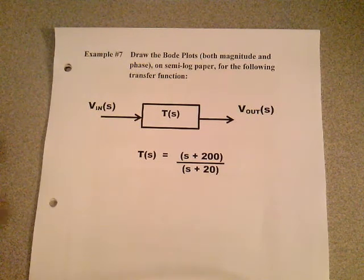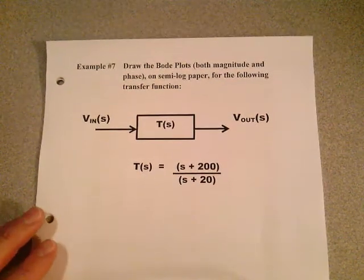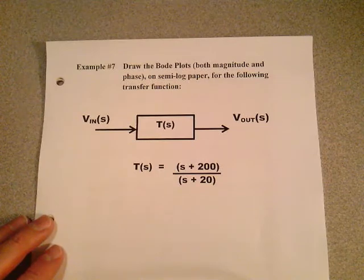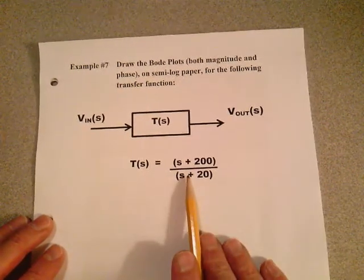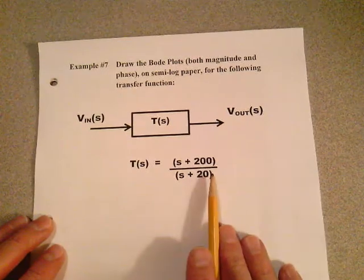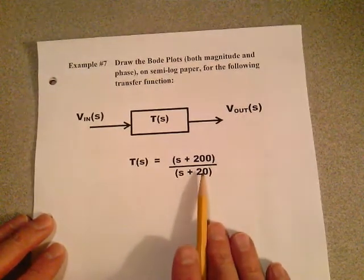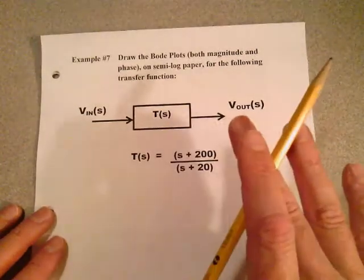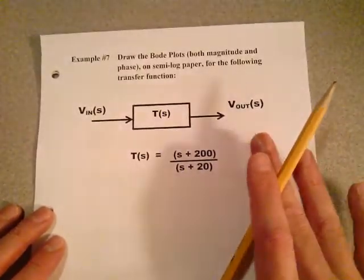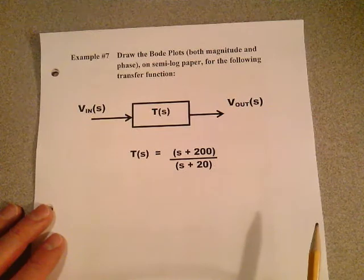Let's take a look at them starting on page 219. Draw the Bode plots, both the magnitude and phase, on semi-log paper for the following transfer function. The transfer function is in break frequency form. The K0 term you have to figure out. I'd like you to go ahead and try to do this example number 7 completely on your own. Stop the video.